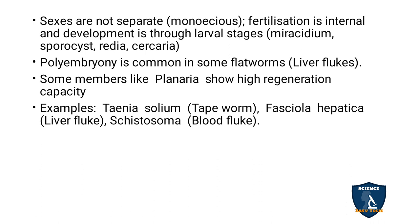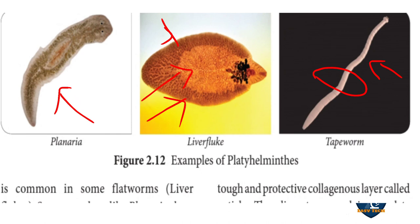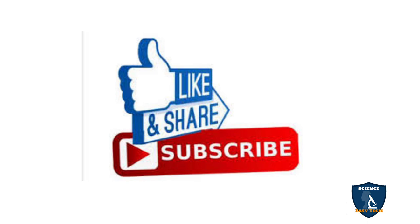Examples are Taenia solium (tapeworm), Fasciola hepatica (liver fluke), and Schistosoma (blood fluke). These are the examples of flatworms. You can see planaria, liver fluke, and tapeworm. Thank you for watching the video. If you have doubts, post them in the comment box. Give a thumbs up, share, and subscribe to the Science Easy Tech channel.